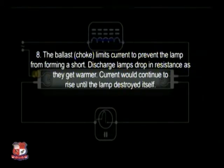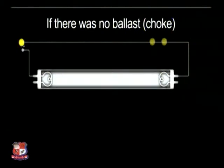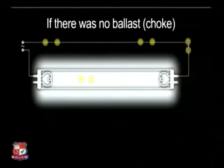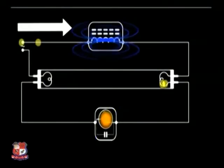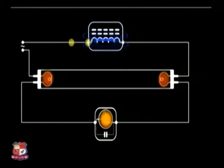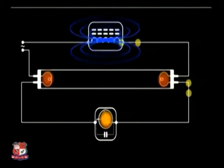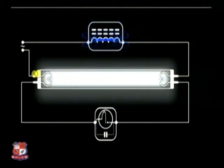The ballast or choke limits the current to prevent the lamp from forming a short circuit. If there is no ballast or choke, a higher voltage would be directly applied to the tube light and it would immediately burn out. That is the importance of the choke coil in the tube light. You can replay the video to understand the proper operation, which shows why the choke coil and starter are connected in the circuit.